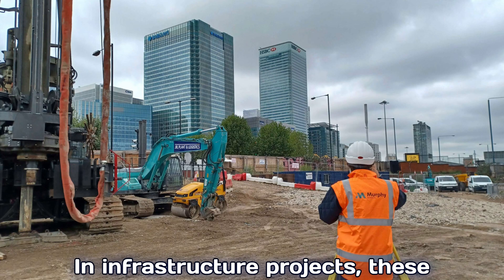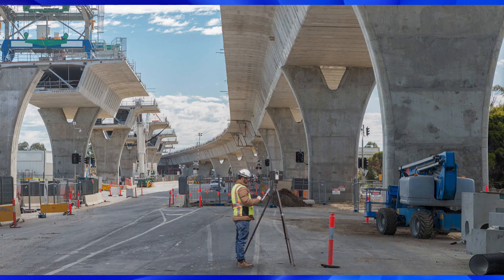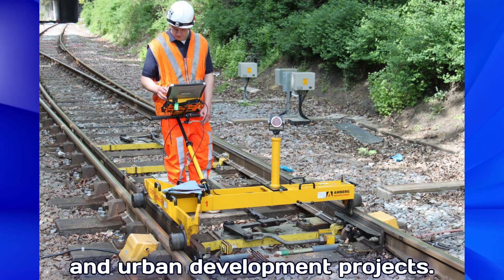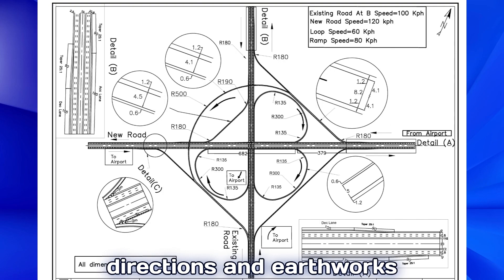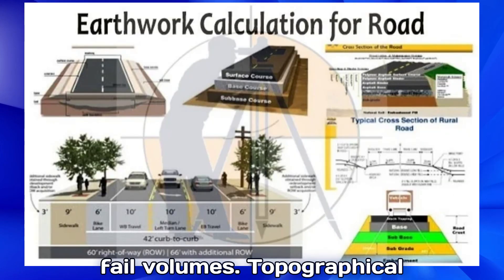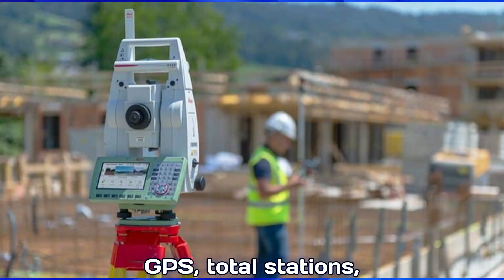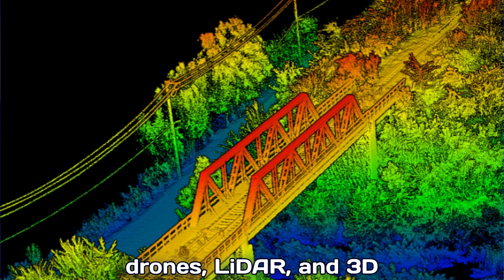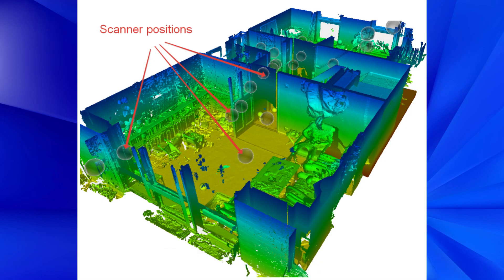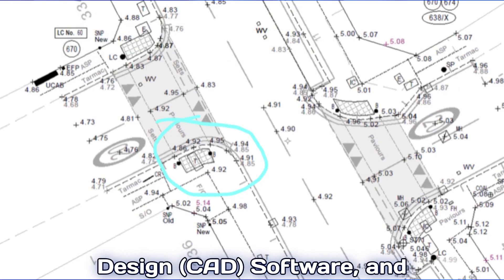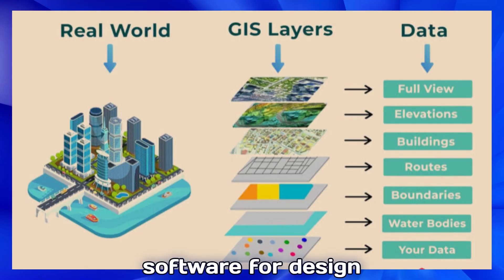Surveyors also help in monitoring and quality control of the project by checking for deformation of structures during construction, which is checked again after construction is completed. They also track ground movement and settlement, and verify that completed works match the design specifications. In infrastructure projects, these surveyors provide essential data for highways, bridges, dams, tunnels, railways, and urban development projects. They assist with selecting road directions and earthworks calculations in cut-and-fill volumes. Topographical surveyors make use of GPS, total stations, drones, LiDAR, and 3D scanning for high-accuracy surveys, and process data with specialized computer-aided design software and geographic information systems for design integration.